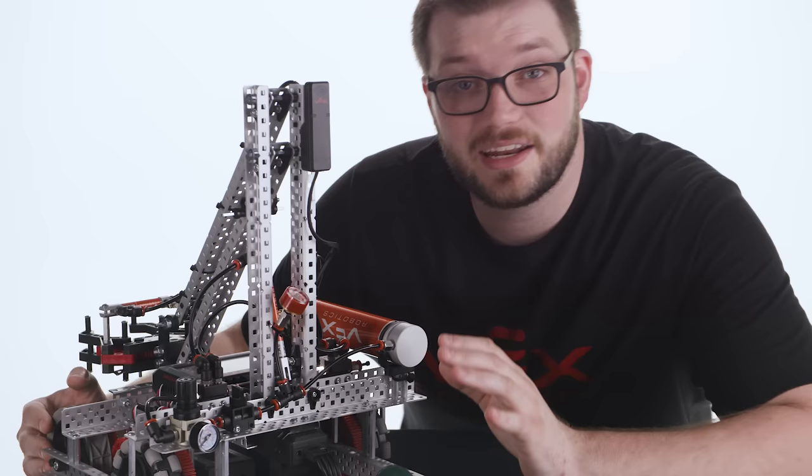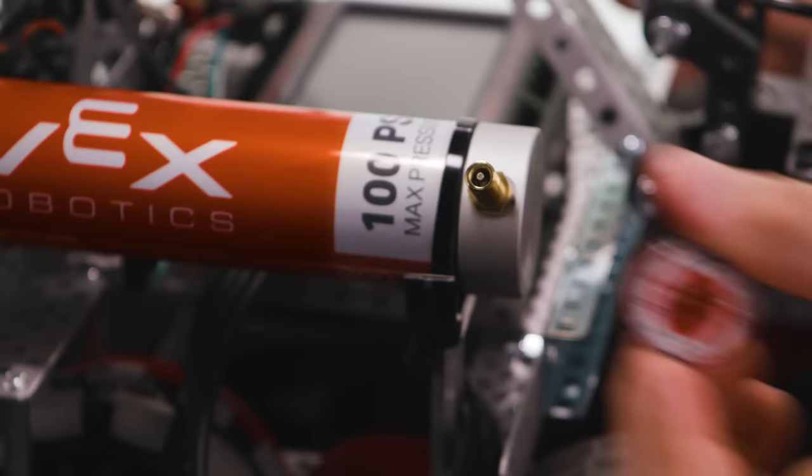The kit includes an air pressure gauge that can be mounted to your robot or directly to the 200-milliliter air tank.